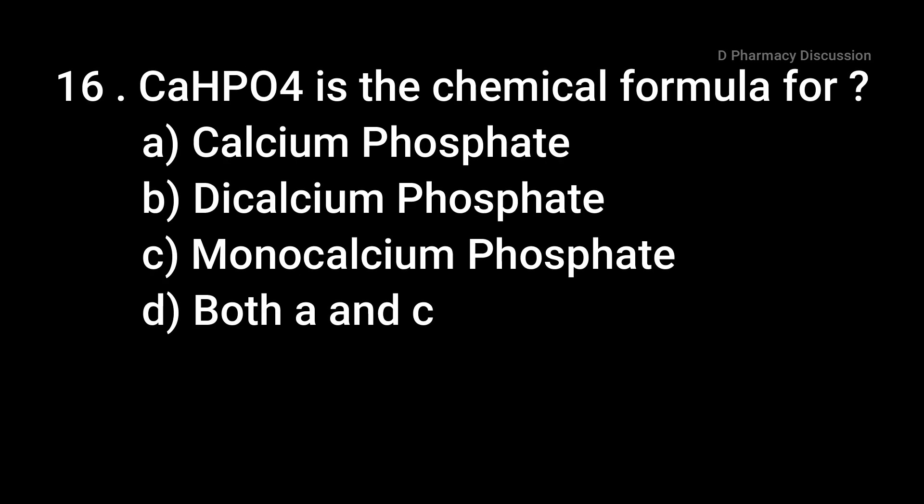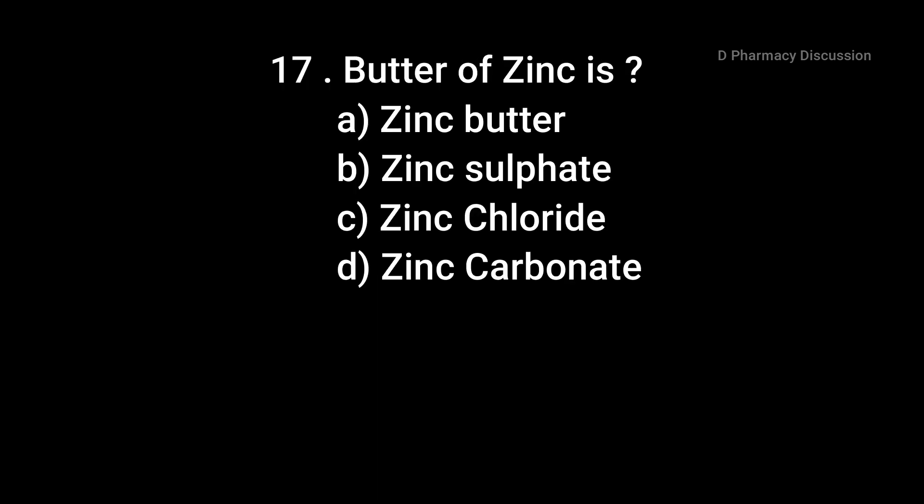Question 16: CaHPO4 is the chemical formula for — option A: calcium phosphate, B: dicalcium phosphate, C: monocalcium phosphate, option D: both A and C. Correct answer is option B, dicalcium phosphate.